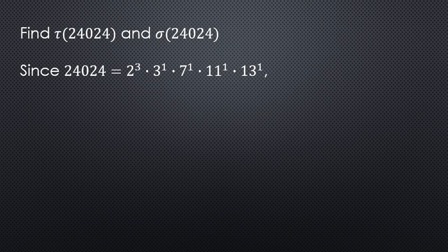We're going to work with this form to figure out what tau and sigma are. For tau, recall from the previous video that we're only working with the exponents on these primes. What we do is add 1 onto every power that shows up, then take the product of all those things. So this will be a 4, a 2, a 2, a 2, a 2, and we take the product of all those, giving us 4 times 2 to the 4th, which is 64.